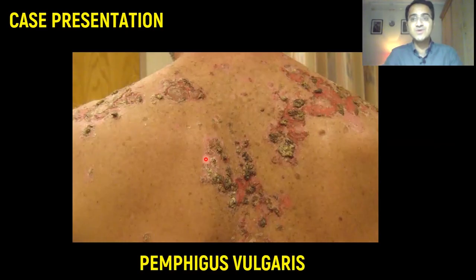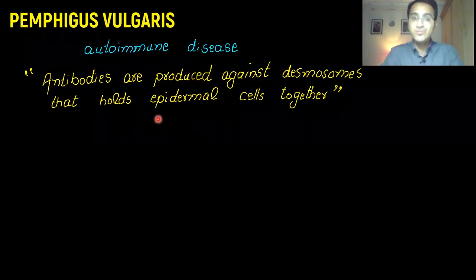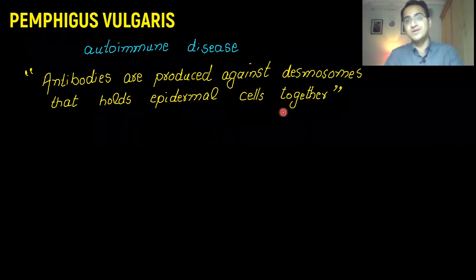What is Pemphigus vulgaris? How do you diagnose it? How do you treat it? Today we are going to talk about that. Pemphigus vulgaris is basically an autoimmune disease in which the immune system produces antibodies that destroy desmosomes that hold the epidermal cells of the skin together.